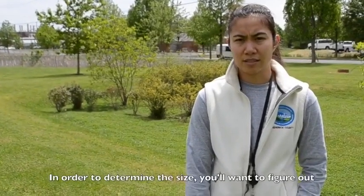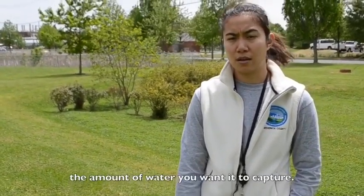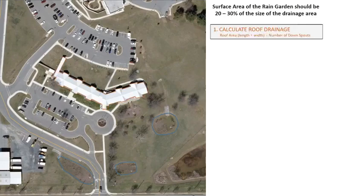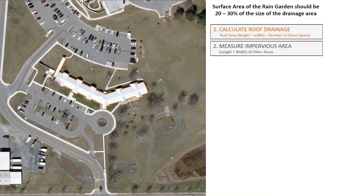In order to determine the size, you'll want to figure out the amount of water you want to capture. The surface area of the rain garden should be 20 to 30% of the size of the drainage area. We will now go through the steps necessary to determine the size of the rain garden. The first step is to calculate the area of roof that will drain to the rain garden, done by dividing the total roof area by the number of downspouts.